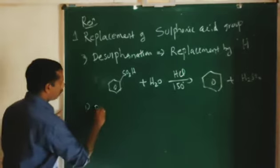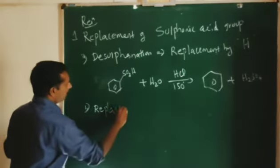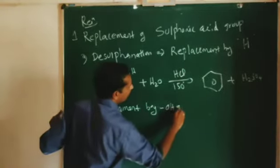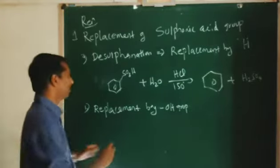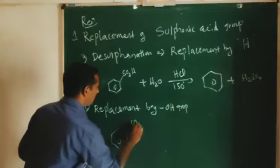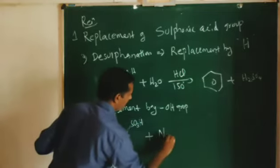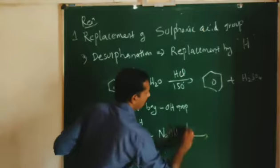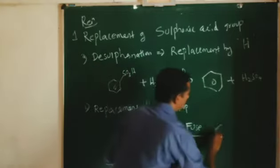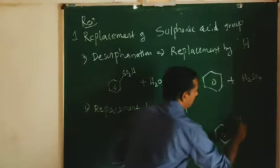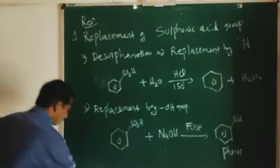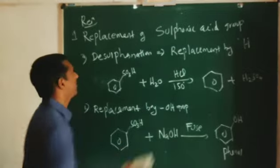The second replacement reaction is replacement by OH group. When benzene sulphonic acid, C6H5SO3H, is treated with sodium hydroxide (NaOH) fused, the SO3H group is replaced by OH. So we get phenol.